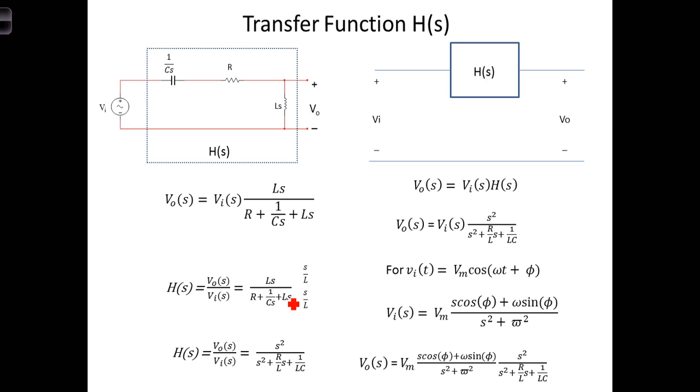Generally speaking, this form of the transfer function isn't as useful as another. Generally we would like to have the transfer function in the form where the polynomial in the denominator is written in descending powers of S, with the coefficient of the highest power of S being 1. To accomplish that, we've got an Ls term here and we have an S in the denominator of the denominator here. If we multiply the denominator by S over L,